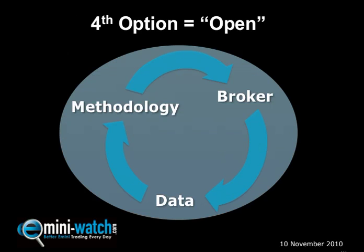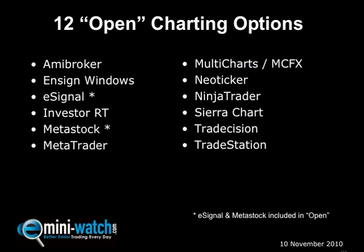So having said there are three biases — methodology, data, or broker — there is a fourth option that gives you more openness and flexibility. If you're not sure about your methodology, your broker, or your data feed, there are options that provide a more open approach to charting software. I'd say there are about 12 in the market, and I want to include eSignal and Metastock here as more open-type charting options, as well as TradeStation, which could also be in the broker list.